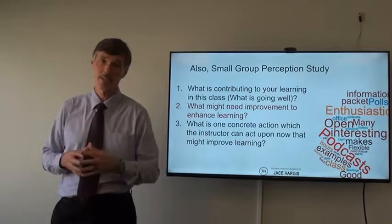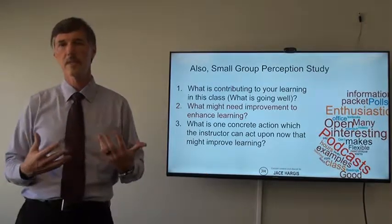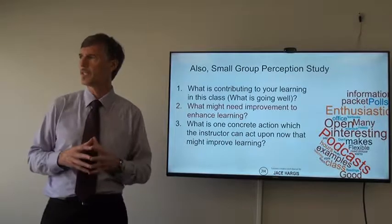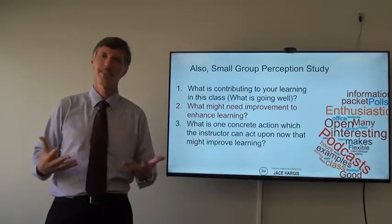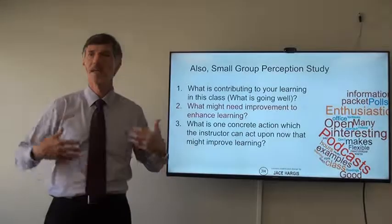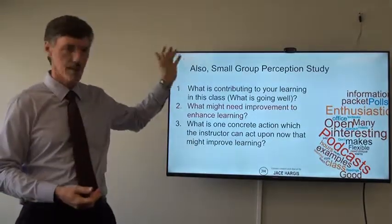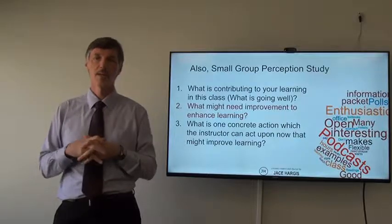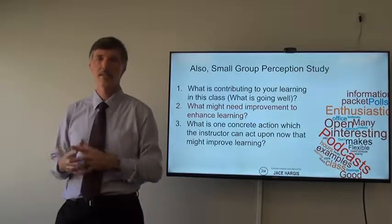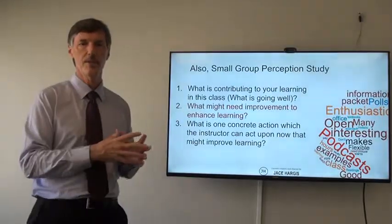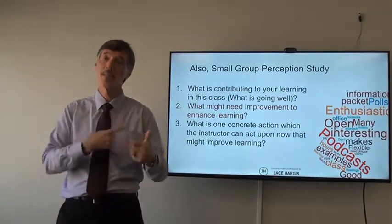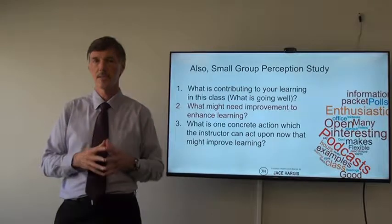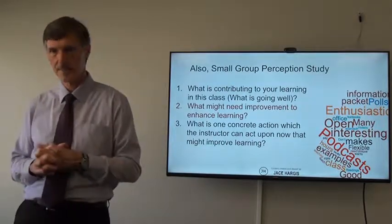One additional thing we do is what's called a small group perception study. This has been done for quite a while. It involves going into the classroom — the last ten minutes or so the faculty member leaves — and we ask basic questions: What's going well? What's not going so well? What's one thing that might be able to change? We do a trend analysis, aggregate the data, and share that with the faculty member somewhere in the middle of the term so that if they needed to make changes, they could make those and see results from the students in that particular class.